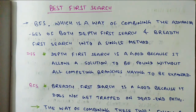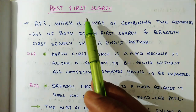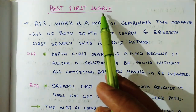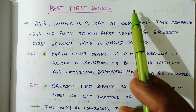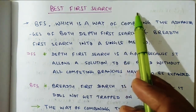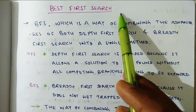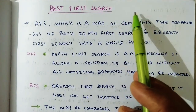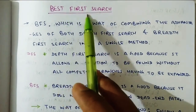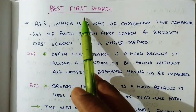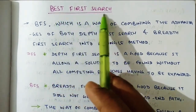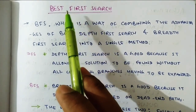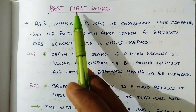Hi everyone. Today we are going to discuss Best First Search Technique. Best First Search Technique is nothing but Informed Search Technique. As we have already discussed, Informed Search Technique and Uninformed Search Technique — Uninformed Search Technique includes BFS, which is Breadth First Search, and DFS, Depth First Search. Informed Search Technique includes Best First Search, A-Star, and Hill Climbing. Informed Search Technique is much better than Uninformed Search Technique.